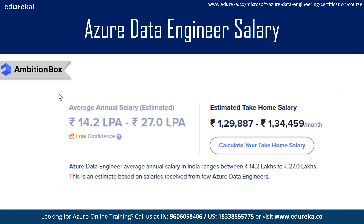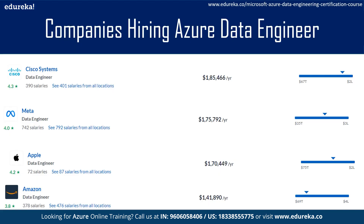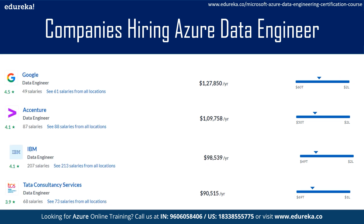Now let's see some of the companies hiring Azure Data Engineers and their offered packages. Cisco Systems offers an average salary of $185,000 per annum. Meta offers $175,000, Apple $170,000, Amazon $141,000, Google $127,000, Accenture $109,000, IBM $98,000, and TCS $90,000 per annum. There are many more companies hiring Azure Data Engineers; these are just a few examples shown on the slide.